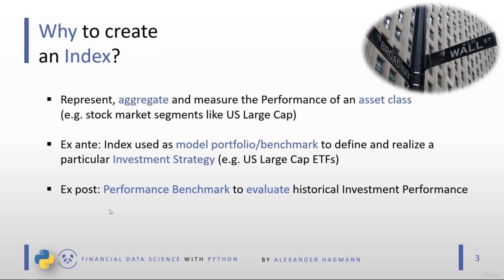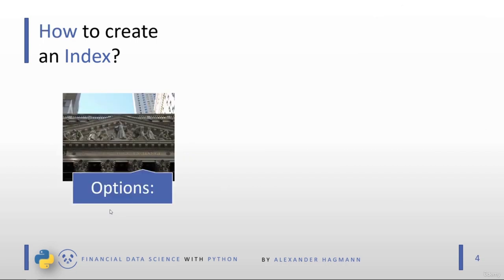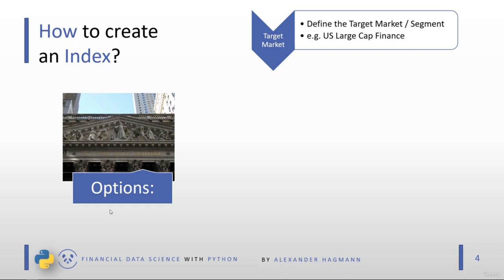Those are the main use cases of financial indexes. The next question is how to create an index, and there are five steps. The very first step is to define the target market that the index should cover or aggregate. There is no limit — the target market can be very broad, like US stocks, or very narrow, like the segment US large cap finance. Once the target market is defined, the question is which securities to include.